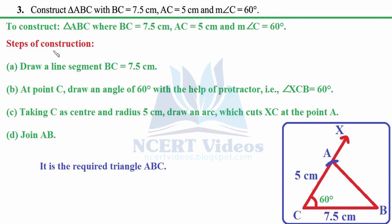Steps of construction, step A: draw a line segment BC equals 7.5 cm. We chose BC — though AC could also work since both share C — just ensure the side you choose includes the vertex where you will construct the angle. Using a ruler, draw the line segment and name the endpoints C and B with measurement 7.5 cm.